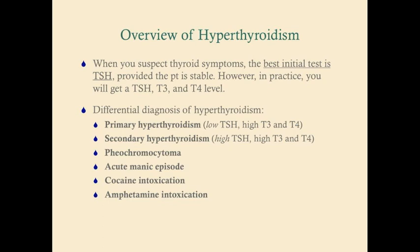Provided the patient is stable, the best initial test is TSH. In the differential diagnosis of hyperthyroidism, primary hyperthyroidism has a low TSH and secondary has a high TSH — both have high T3 and T4. A pheochromocytoma, a tumor of the adrenal gland secreting epinephrine, can mimic hyperthyroidism but is distinguished by severely elevated blood pressure, which does not typically occur in hyperthyroidism.